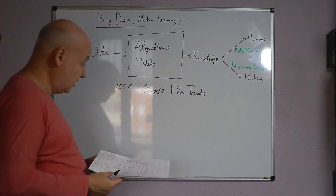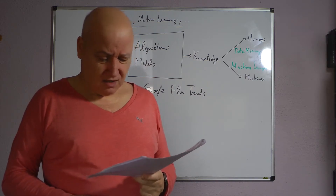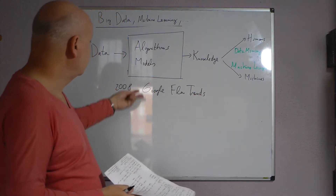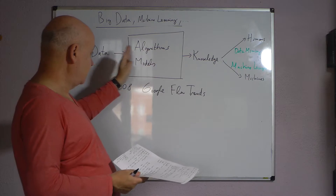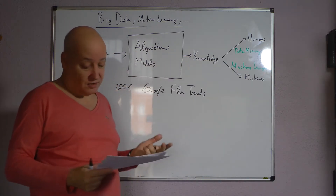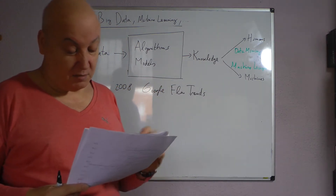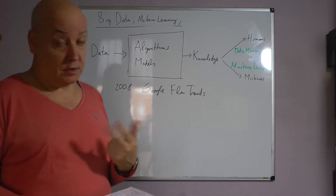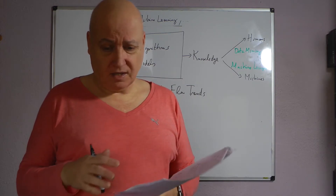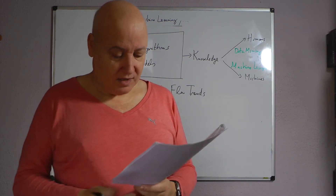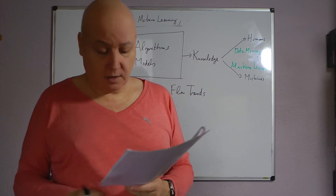Sometimes people put a fourth V in big data for visualization, but I think that this is something you do at various places in the pipeline. Visualization is a big part of what you do with data, but I don't think it is something special to big data. Big data does require special models of visualization, and there are fields like data journalism dealing with how to visualize complex information.